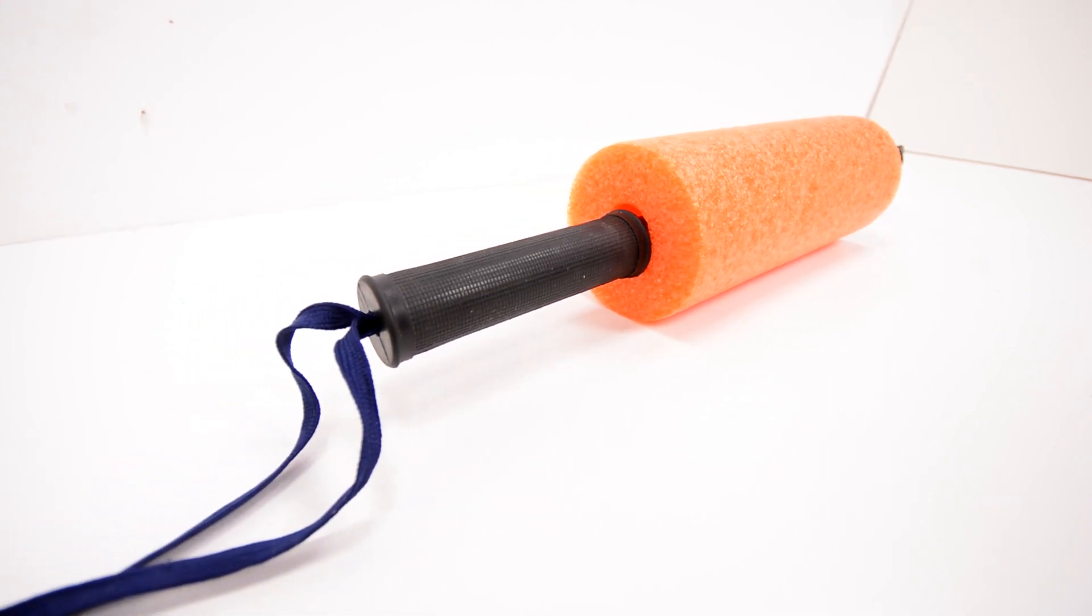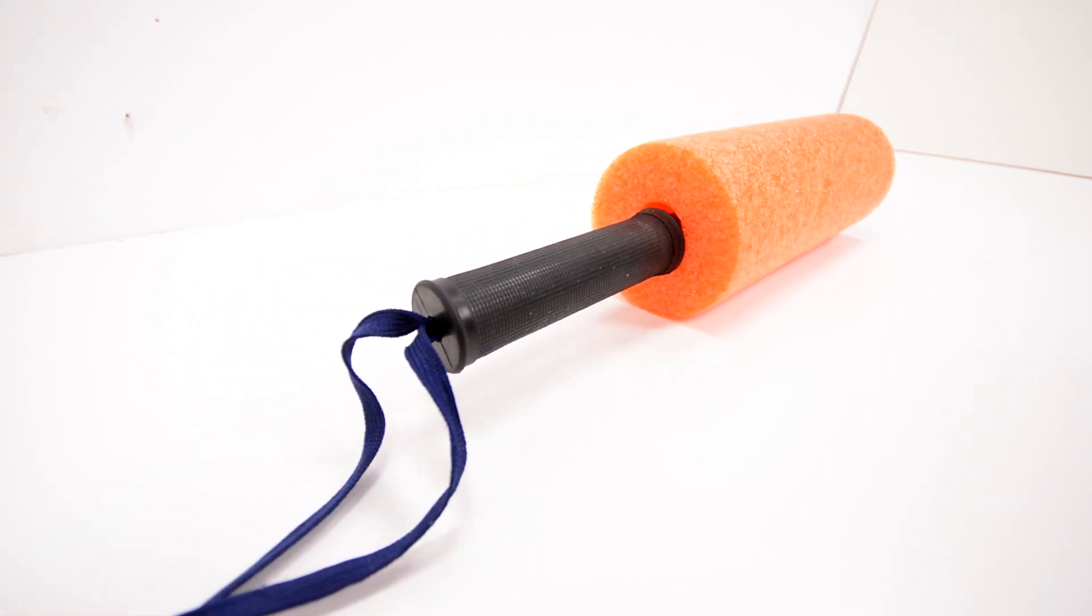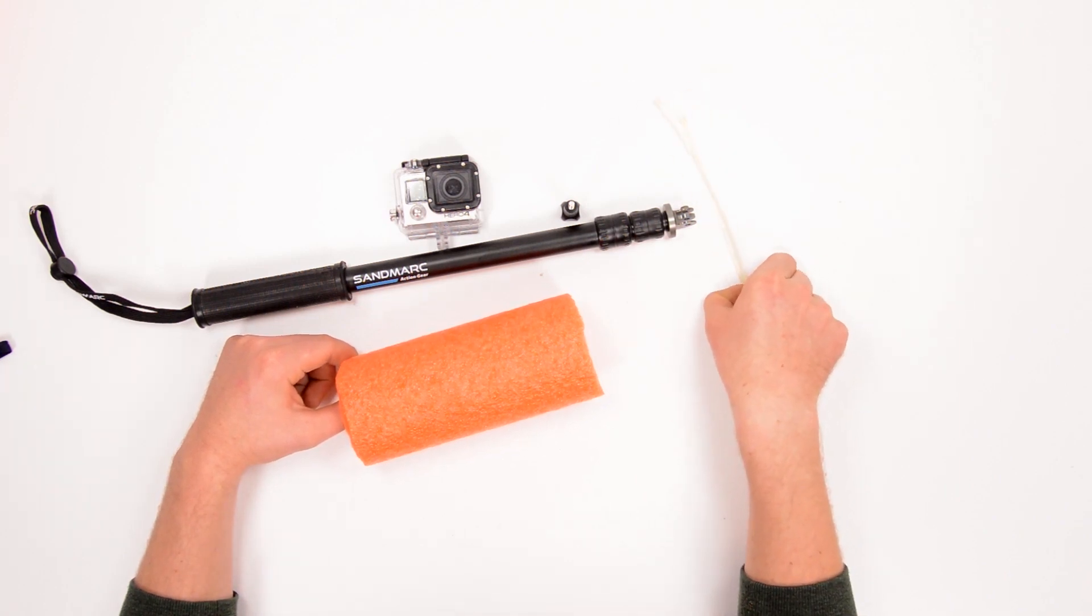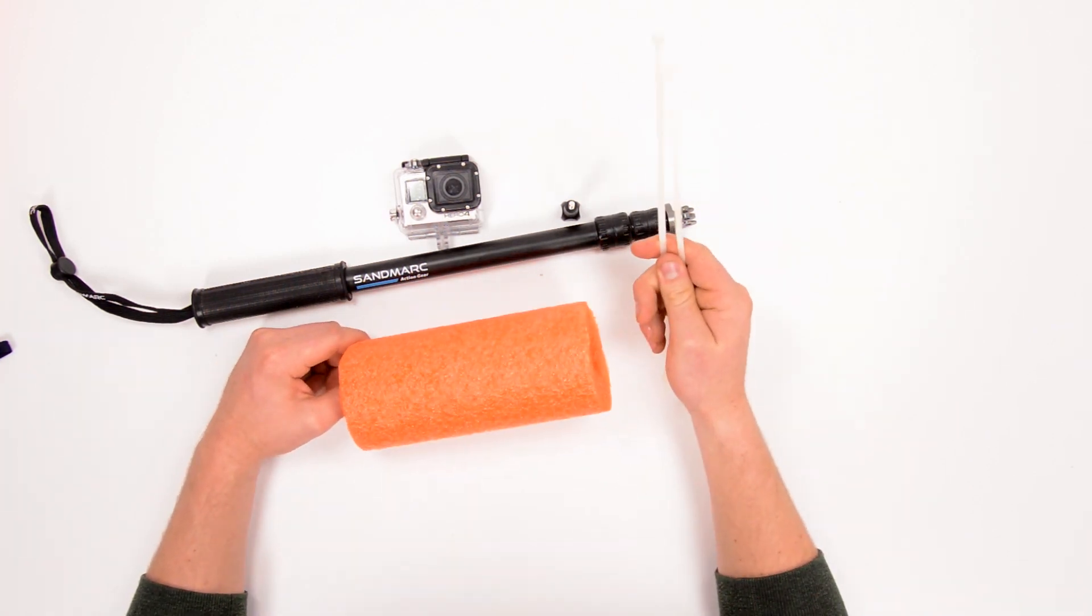So to do this, you're going to need exactly the same thing as before. That piece of pool noodle, your GoPro pole. But you're also going to need two zip ties.